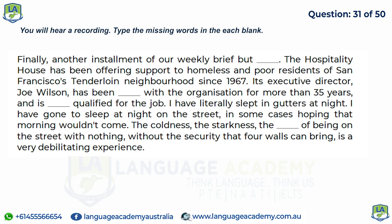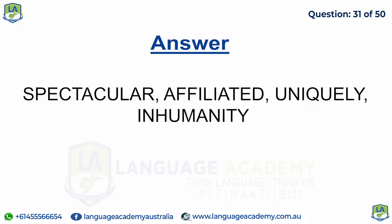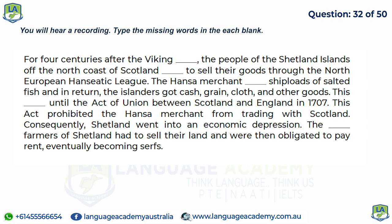For four centuries after the Vikings declined, the people of the Shetland Islands off the north coast of Scotland continued to sell their goods through the North European Hanseatic League. Hansa merchants bought shiploads of salted fish, and in return the islanders got cash, grain, cloth, and other goods. This lasted until the Act of Union between Scotland and England in 1707, which prohibited Hansa merchants from trading with Scotland. Consequently, Shetland went into an economic depression; independent farmers had to sell their land, pay rent, and eventually became serfs.